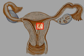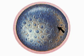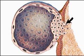The hollow ball of cells now contains up to 100 cells, arranged as an outer ring and an inner mass. The outer ring grows outward and penetrates the uterine tissue, while the inner mass divides into two separate layers, an inner endoderm and an outer ectoderm.